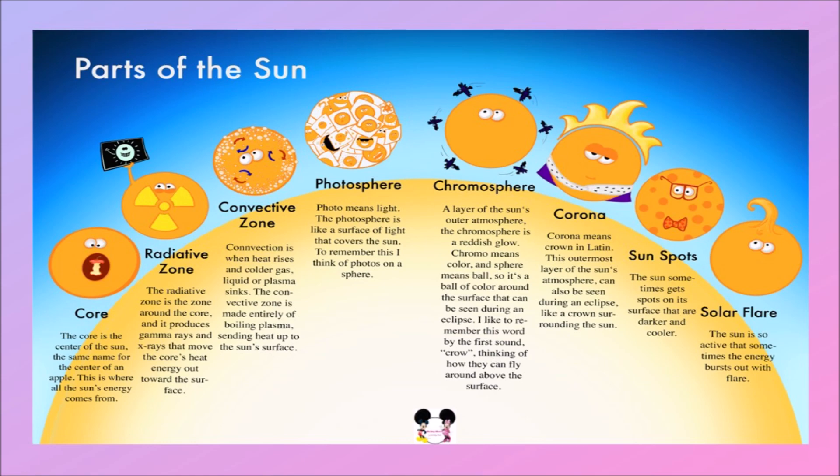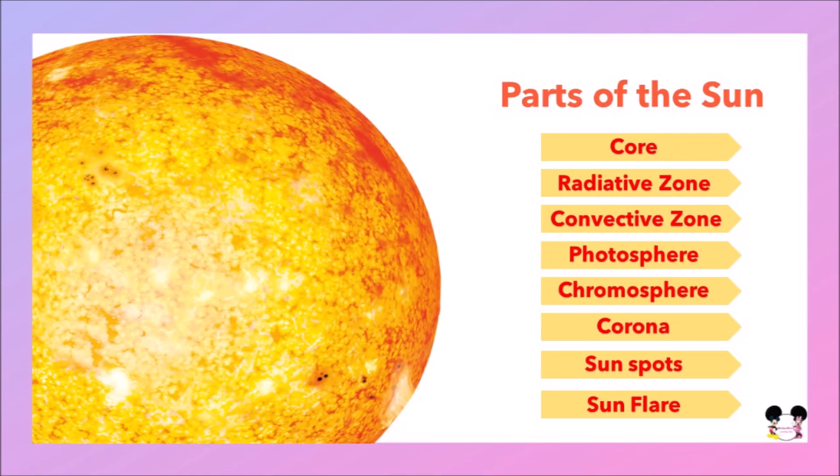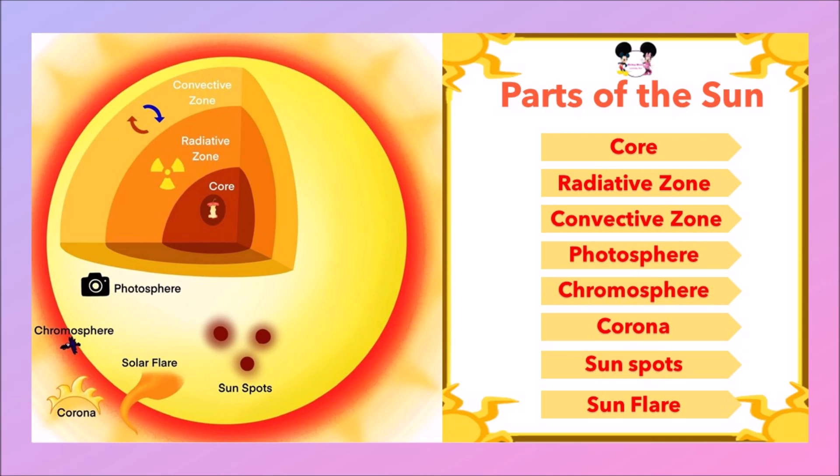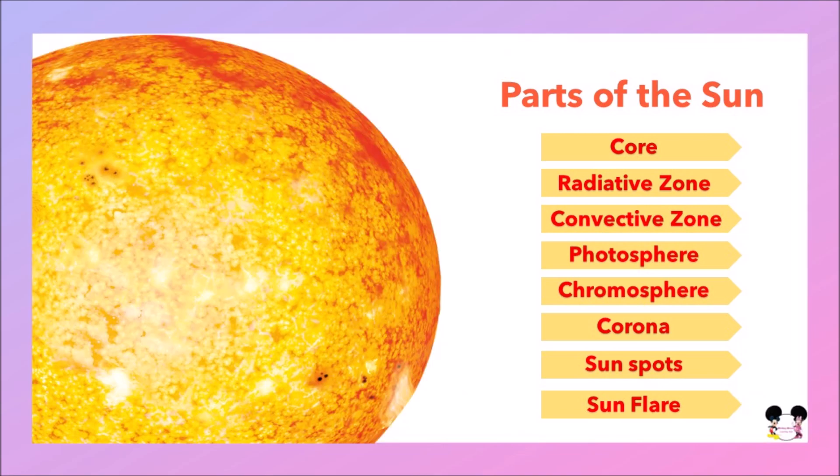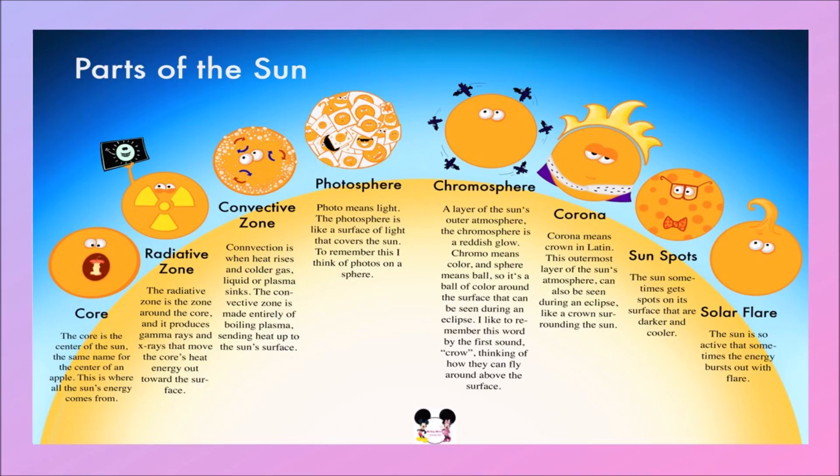The first one is core, the second one is radiative zone, the third one is convective zone, the fourth one is photosphere, the fifth one is chromosphere, the sixth one is corona, the seventh one is sunspot, and the last and the eighth one is solar flare. These are the eight parts of the Sun.